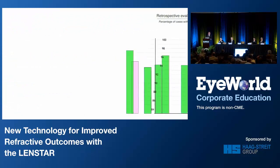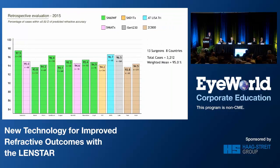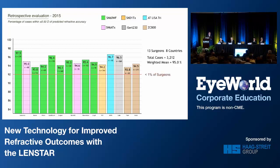Next is retrospective testing, and this blew our socks off. This is 13 surgeons in eight countries — 3,212 cases — and these cases had never been seen by the algorithm. We're in the low to mid-90s pretty much for everybody. The only flaw in this type of study is that we were sampling the boundary models where we knew the outcome, so we had a piece of information that could not be known prior to surgery. But what really got our attention is that less than 1% of surgeons are at 92% and only 6% are at 84%. The only way to test this in a way that stands up to scientific rigor is prospective testing.